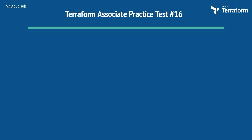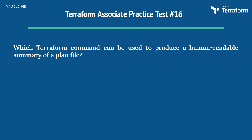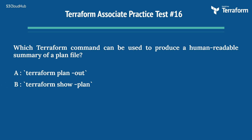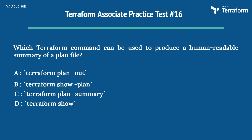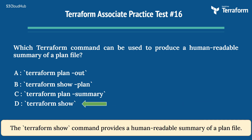The sixteenth question is: which Terraform command can be used to produce a human-readable summary of a plan file? Option A: terraform plan -out. Option B: terraform show plan. Option C: terraform plan summary. Option D: terraform show. The right answer is Option D: terraform show. The terraform show command provides a human-readable summary of a plan file.